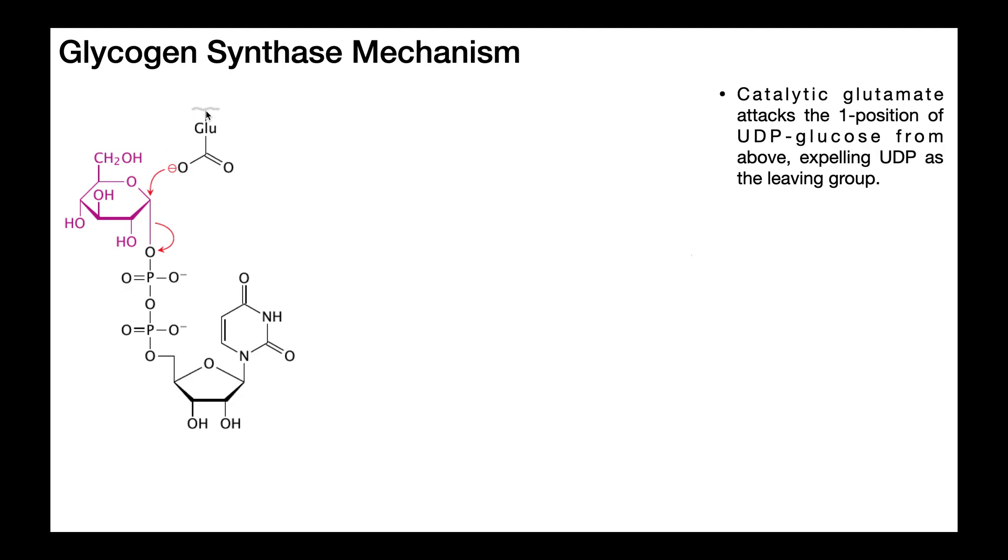Now as part of the enzyme, we have this catalytic glutamate residue. You can see it's deprotonated, and it's going to have a lone pair here that's going to attack that one position of glucose from the top. This UDP moiety makes this carbon extremely reactive, especially to nucleophilic attack.